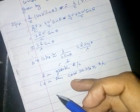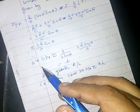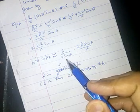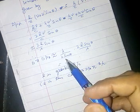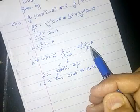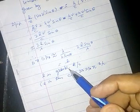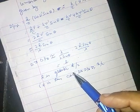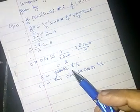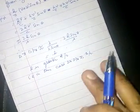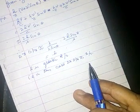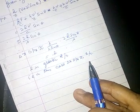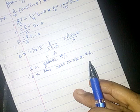Now, delta x into delta px equals lambda upon 2 sin theta times 2h upon lambda into sin theta, which is approximately equal to h. It states that the product of the uncertainty of the x component of momentum of the electron and the uncertainty in the position along x axis is of the order of Planck's constant, which is greater than h bar upon 2.